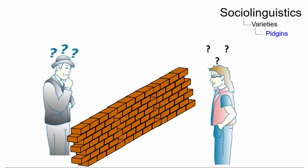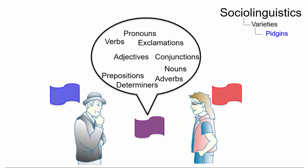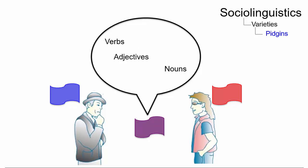A pidgin serves as a solution to a language barrier and involves the development of a new language that is built from the lexicon of a target language. Pidgins are often defined as reduced languages that are native to no one, but rather are used by people who do not share a common language.